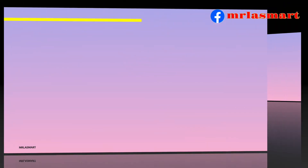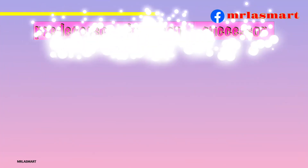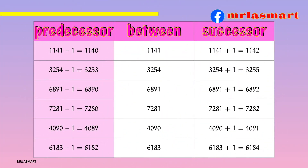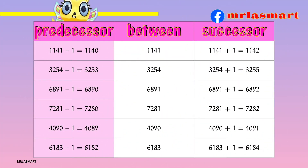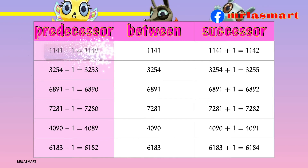Now, let's apply the concepts with the four-digit numbers. Here comes the table. Subtract one to get the predecessor. Add one to get the successor.